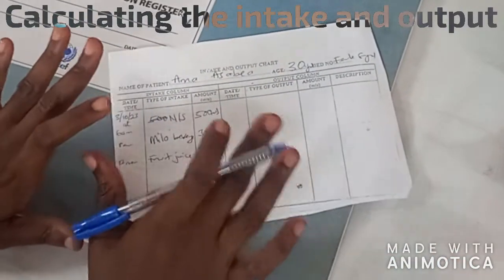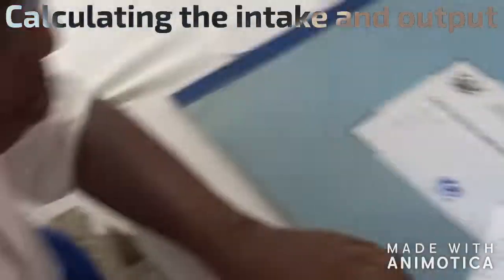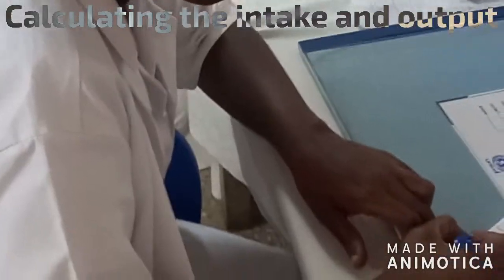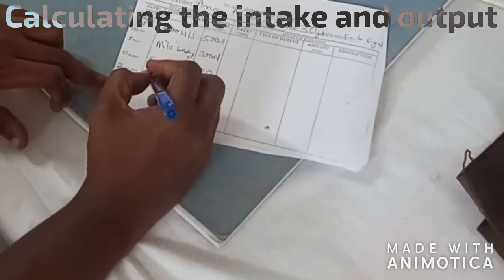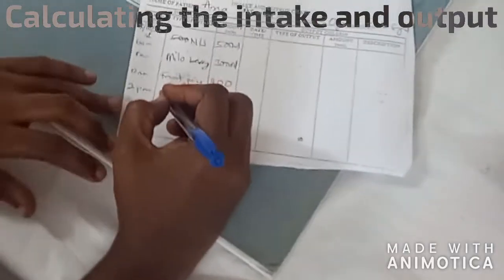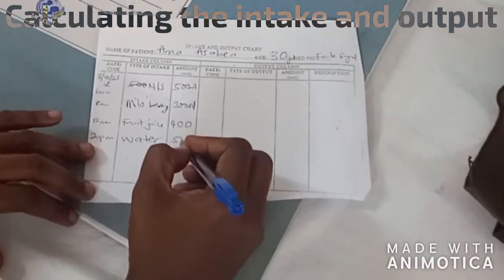This is recorded for 24 hour period, so everything patient has taken within that period should be recorded. At 2pm patient took water, 500 mls.